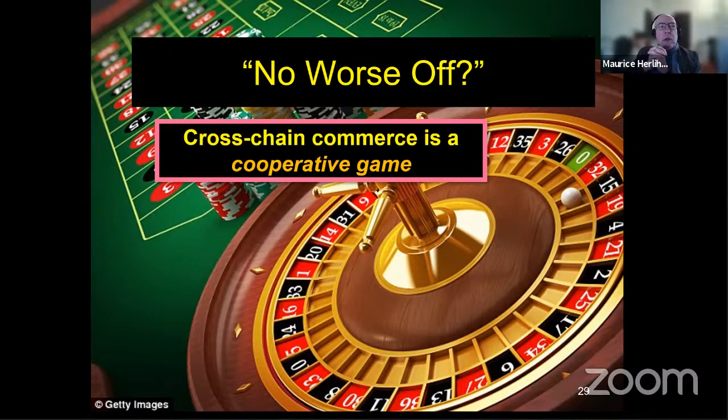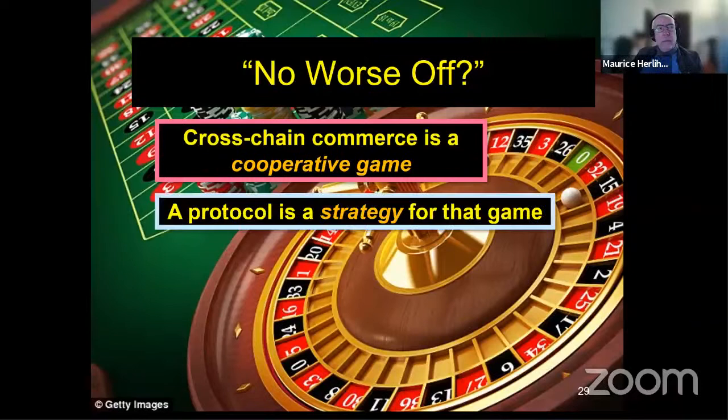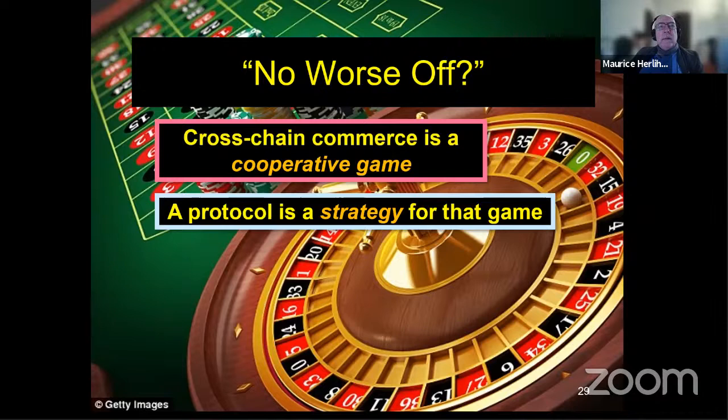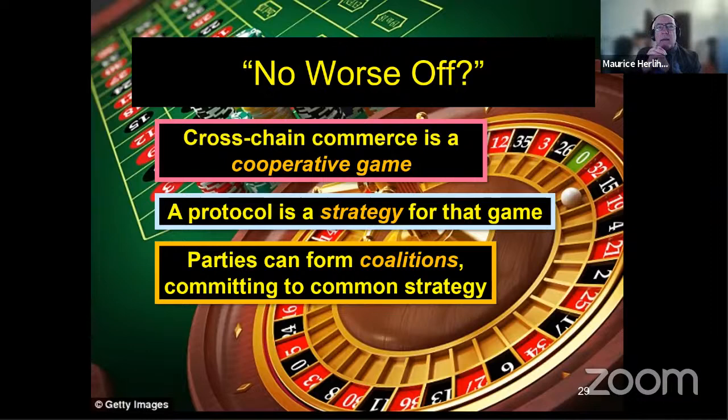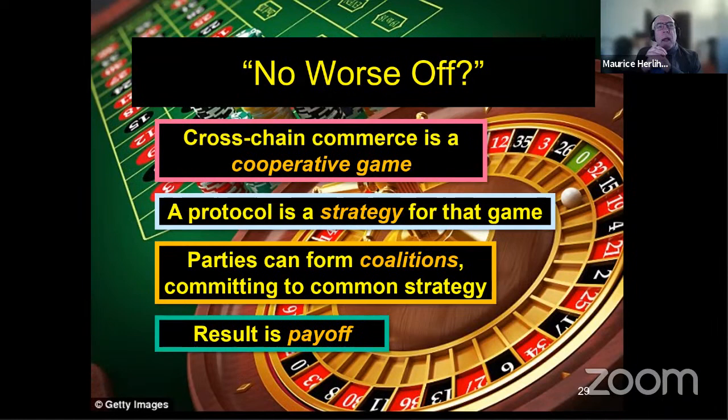What does it mean to say that if you're honest and conforming that you end up no worse off? Well, of course, it's a complicated subject that I can't exhaust here. But one way to think about this is to use a little bit of cookbook game theory, nothing terribly profound, but some useful vocabulary. So cross chain commerce is what game theory people call a cooperative game and a protocol is a strategy for that game.